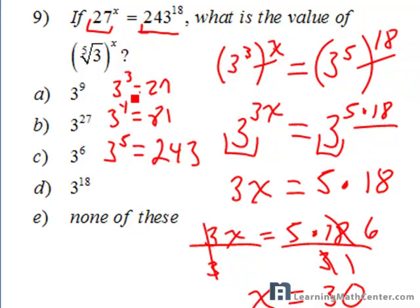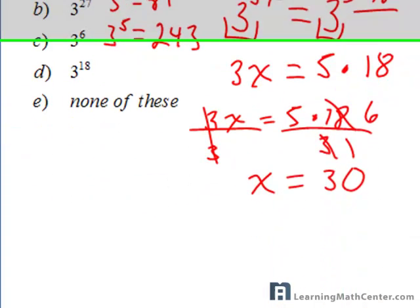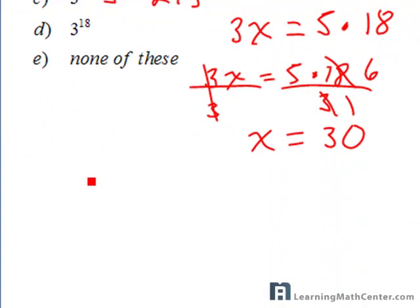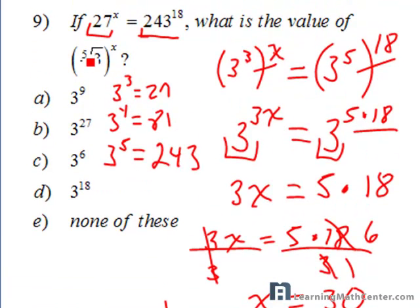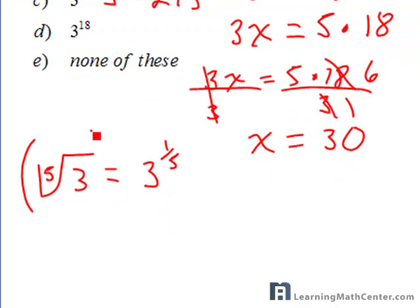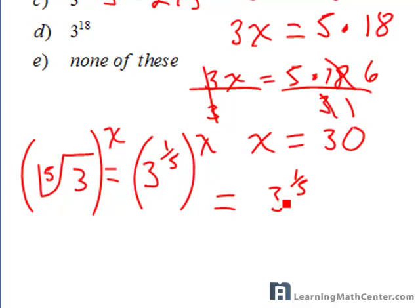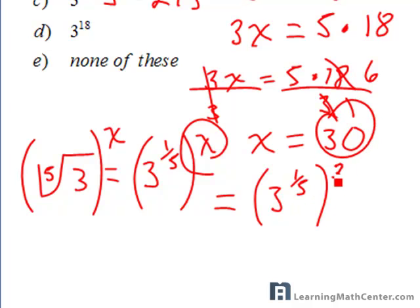Now the question is, what is the value of the 5th root of 3 raised to the x power? So remember, roots are fraction exponents. So if I want to get the 5th root of 3, I can rewrite that as 3 to the 1/5th. And now the question is, I have the 5th root of 3 raised to the x power. So that means that this 3 to the 1/5th is raised to the x power. So that is equal to 3 to the 5th power. And I already know that x is equal to 30. So it's 3 to the 1/5th power to the 30th power.